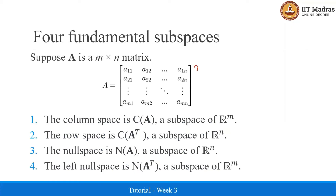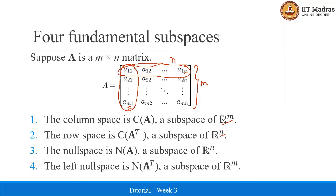Let us consider a matrix A which has m number of rows and n number of columns. The column space of this matrix is C of A, which is a subspace of R^m spanned by the column vectors of the matrix A. Each column consists of m number of components, so it is in an m-dimensional subspace. The row space is a subspace of R^n spanned by the rows of matrix A, since each row has n number of components.